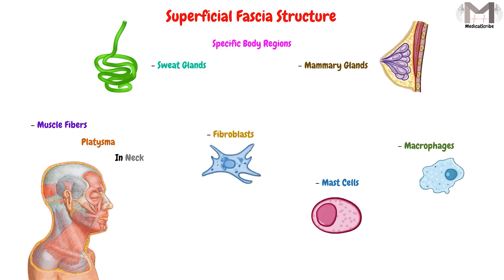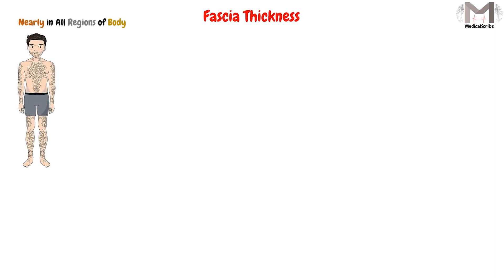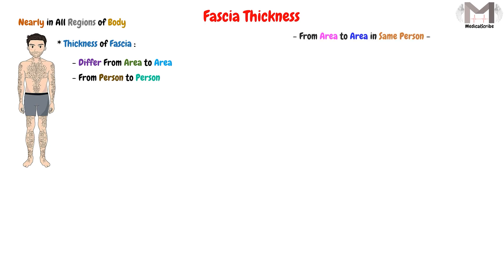Those are the structures and components of the superficial fascia. We mentioned earlier that it exists in nearly all body regions, but the thickness of this fascia differs from area to area and from person to person. The distribution of subcutaneous tissue will differ from one area to another even within the same person.